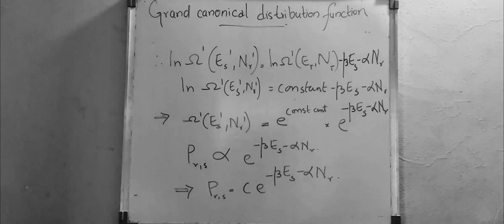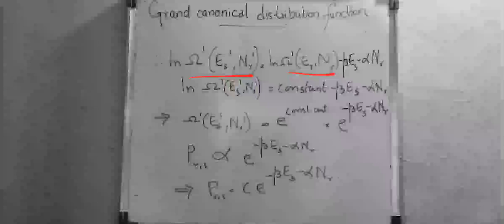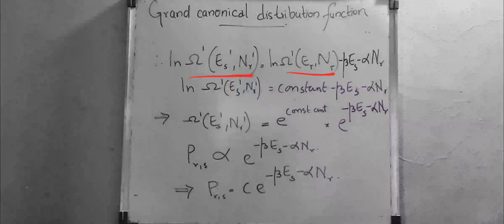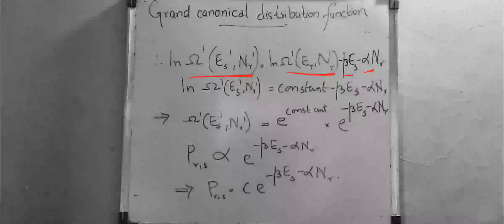This is exactly like how we did in the canonical ensemble formulation, but there the dependence was only on the energy factor. Here we have two dependencies: one on energy and one on number of particles. We know that ∂/∂E of log Ω is β and ∂/∂N of log Ω is α.